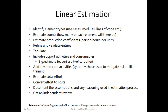Here's how to do the linear method of estimation. First, identify the element types you wish to count — use cases, modules, or lines of code. Then estimate the counts: how many use cases, modules, or lines of code will there be? Estimate production coefficients — the person hours the team will expend to create one unit of the element being counted. Through discussion, refine and validate these entries. Tabulate them in a spreadsheet. Don't forget to include support activities — for example, estimate support as a percentage of overall development effort. Add non-core activities such as risk mitigation activities like training.